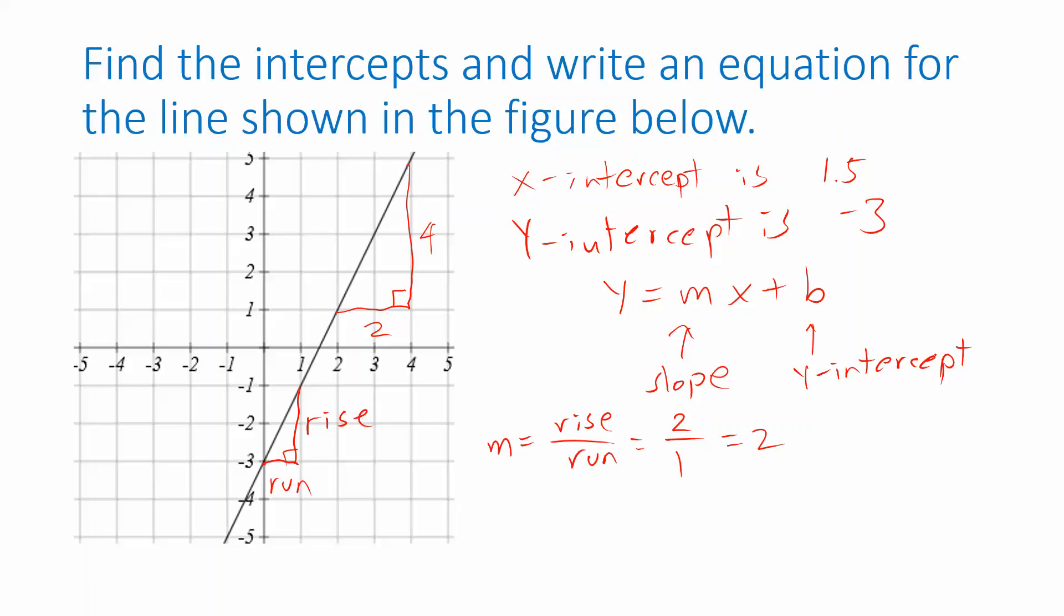We've got enough information now to write down an equation for this line. The slope we just found is 2. So y equals 2x plus the y-intercept. The y-intercept is negative 3. Instead of writing plus negative 3, I'm just going to write minus 3. And here we have an equation for this line.